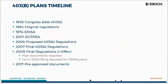Moving on to the reason you're here. Back in 1958, Congress originally added the 403(b) provisions. A number of years later we got regulations to oversee that. Then ERISA — the Employee Retirement Income Security Act of 1974 — was put in place, and that became the foundation of most of today's retirement plan rules, not only in the 403(b) space but the 401(k) as well.